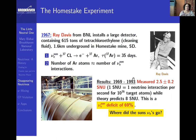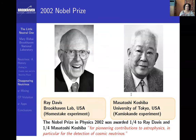It actually turns out this is real. The Homestake experiment really did happen. The solar neutrinos are there — it's just that there's a deficit of 70%. The 2002 Nobel Prize was won by Ray Davis and Masatoshi Koshiba for their study of the mystery of the disappearing neutrino.